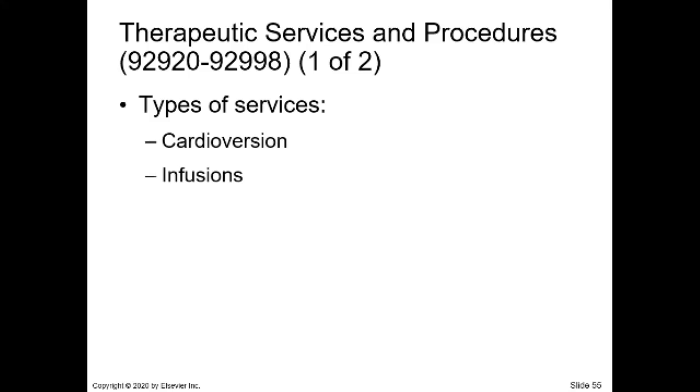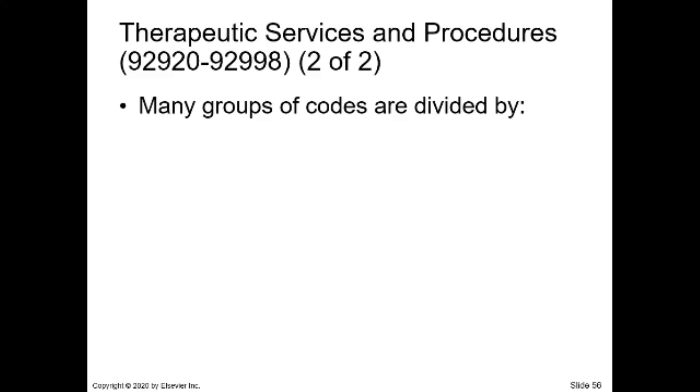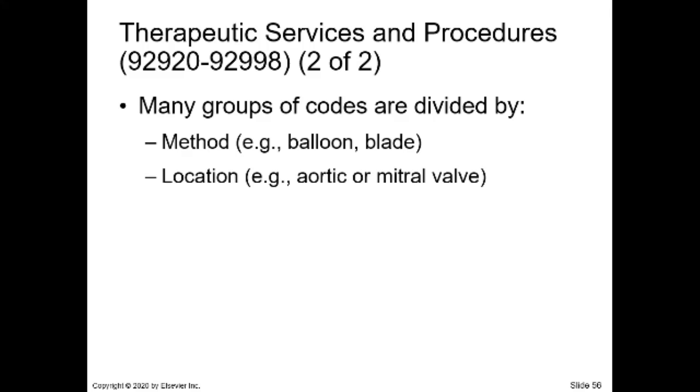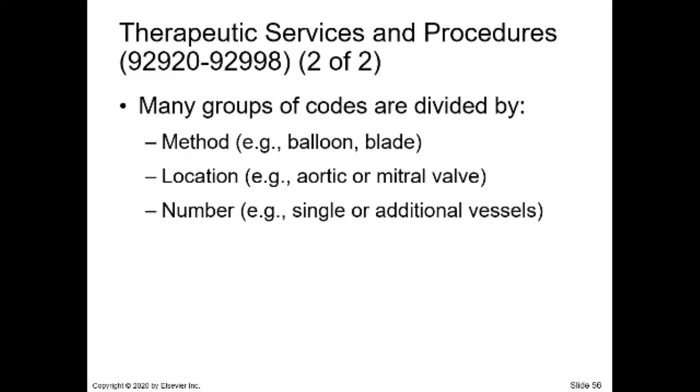Let's go back to therapeutic services and procedures. Turn to 92920 in your CPT. The types of services you'll find in therapeutic are cardioversion, infusions, thrombolysis, and catheter placement. Many of these services used to be performed with open procedures but are now performed percutaneously. Many groups of codes are divided by method, for example balloon or blade; location, for example aortic or mitral valve; or number, such as single or additional vessels.